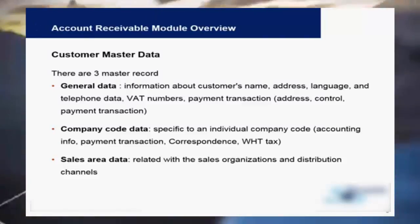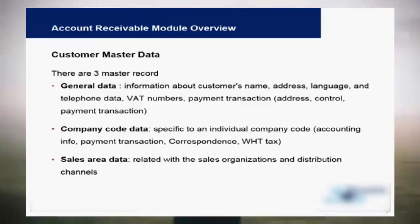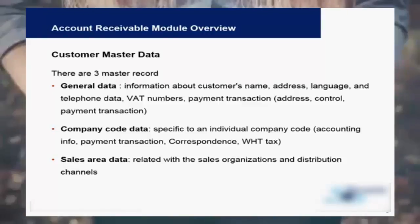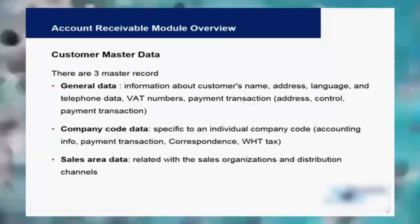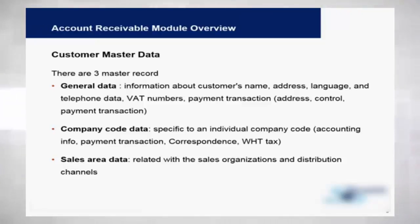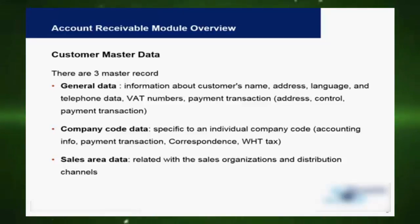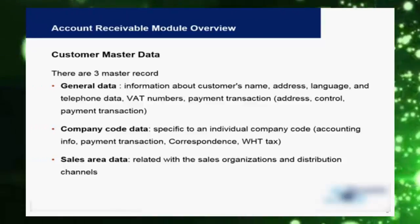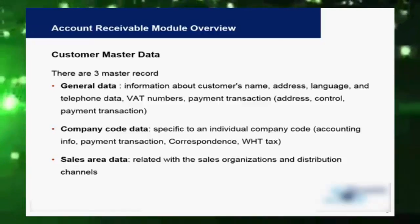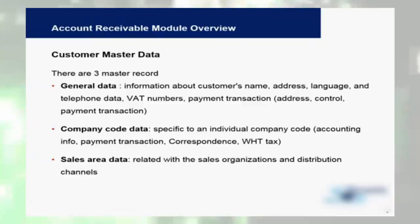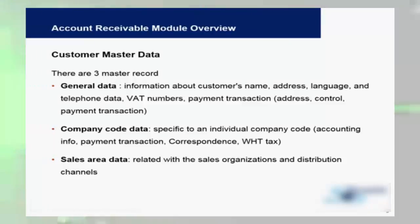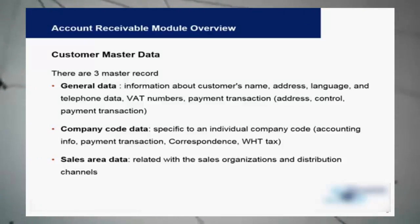The customer may be created in different company codes, so there is a company code data tab. Within this tab you find information like payment transactions, correspondence, reconciliation account, and different payment methods the customer will use. Finally, similar to purchasing organization data for vendors, we have sales organization data here — if you have multiple sales areas within your company code you can further bifurcate the customer master data.